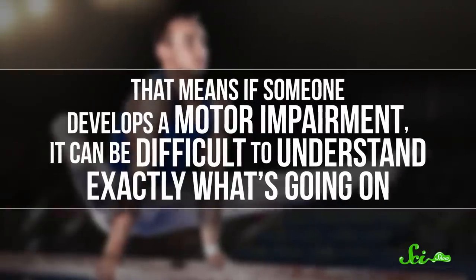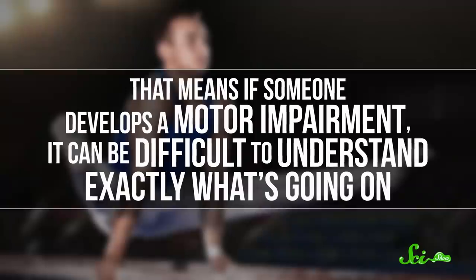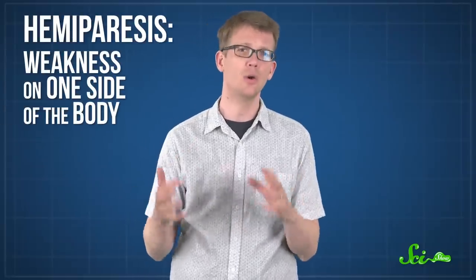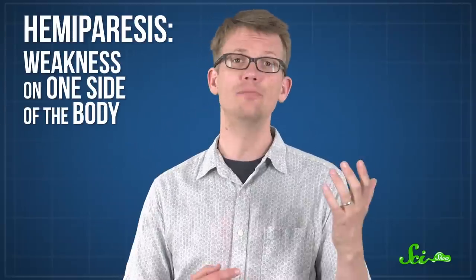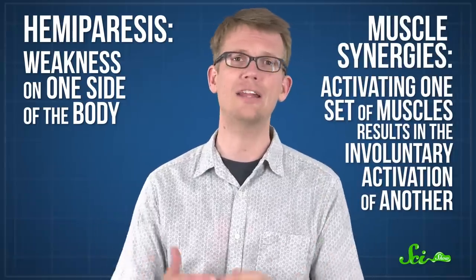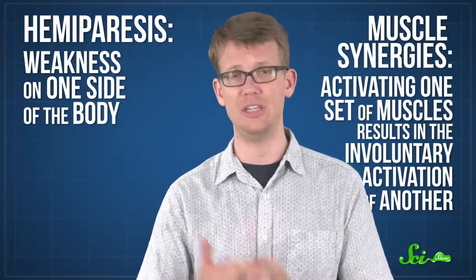And that means if someone develops a motor impairment, it can be difficult to understand exactly what's going on. For example, people recovering from a stroke sometimes experience hemiparesis, or weakness on one side of the body. Others may have muscle synergies, where activating one set of muscles results in the involuntary activation of another. Both conditions may be a result of missing or mixed communication from the brain, changes to the muscles themselves, or some combination of the two.